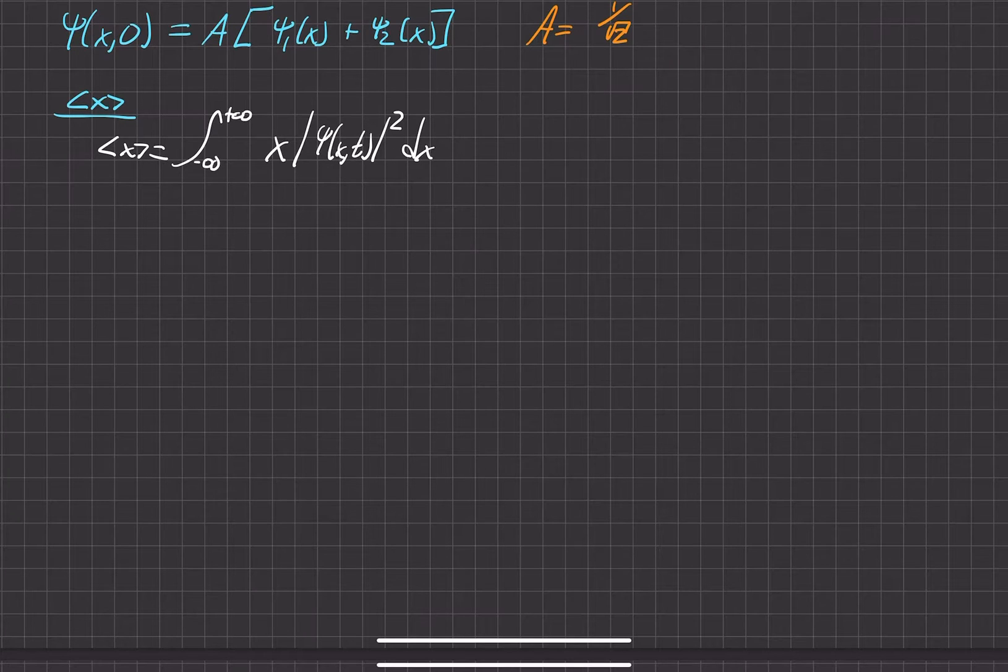In our case, our space that we are concerned about right now is just 0 to a for the infinite square well. And for this part of the problem we already found that in part b, so we can just go ahead and throw that in there. It's going to make for kind of a long integral, but I'll just go ahead and do it.